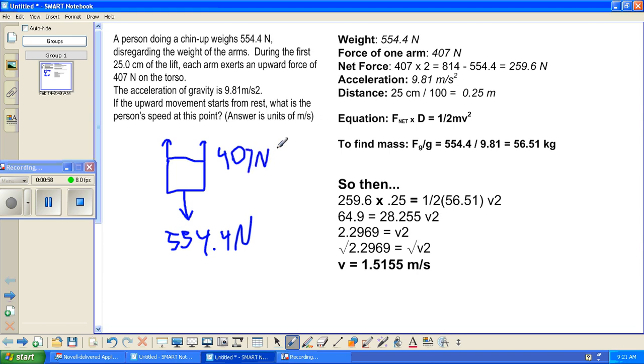So, in order to find his net force upwards, we have to multiply 407 times 2, and we get 814 newtons. And then, minus his downward force of 554.4 newtons, gives us our net force of 259.6 newtons.